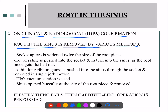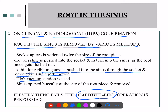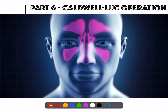Roots in the socket can be removed by various methods: widening the socket apex to twice the size of the root apex and attempting removal; irrigating with large volumes of saline to flush out the root; pushing a thin long rubber gauze through the socket into the sinus and removing it in a single jerk; or using high-vacuum suction. Ultimately, the most important approach is the Caldwell-Luc operation.